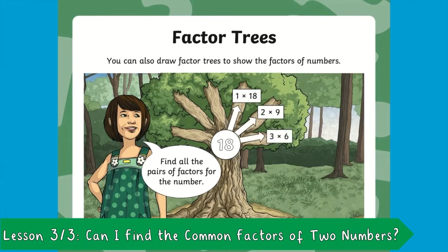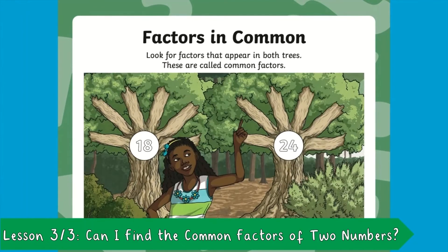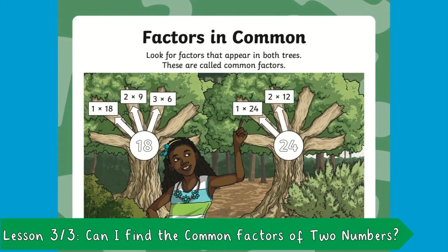You don't actually need to draw a tree here, just circles and arrows. Here, you can see factor trees for the numbers we've just looked at, so 18 and 24. If there are factors that appear in both trees, these are called common factors.